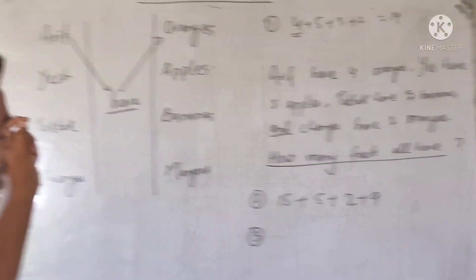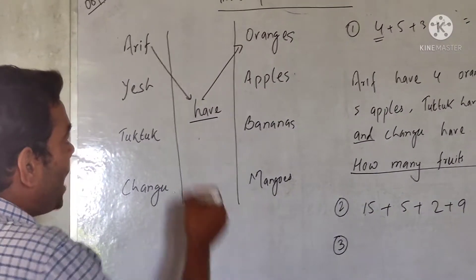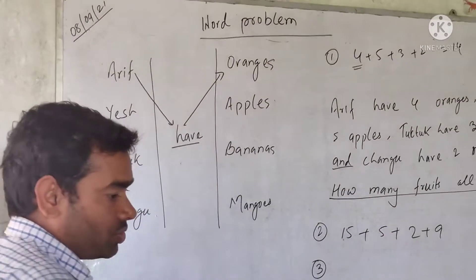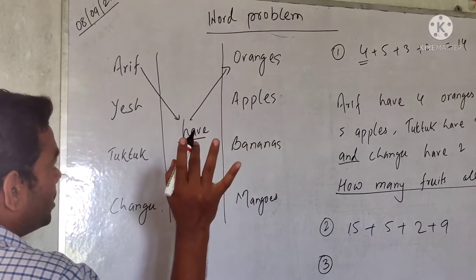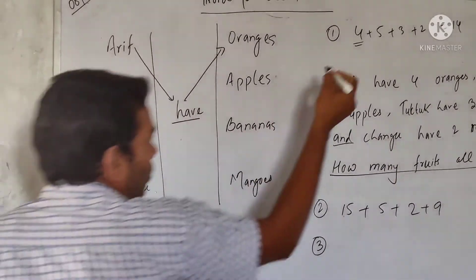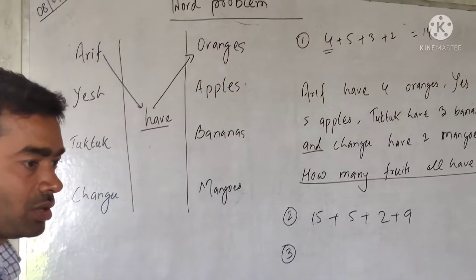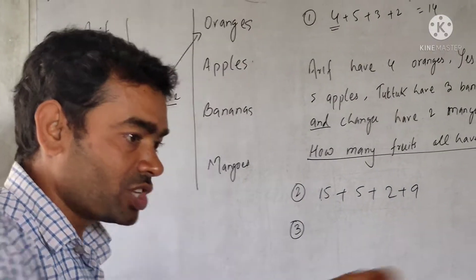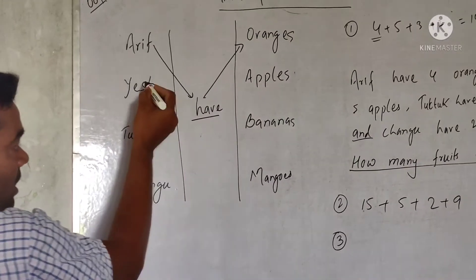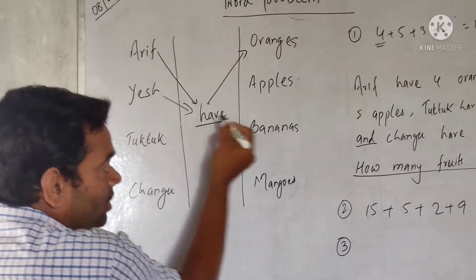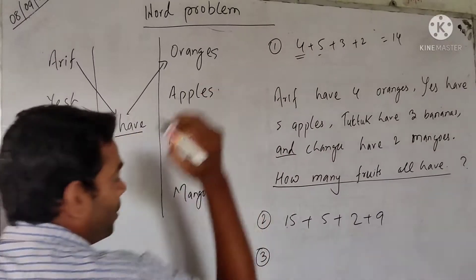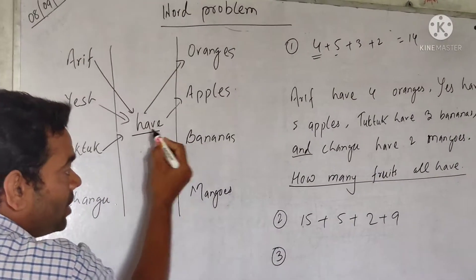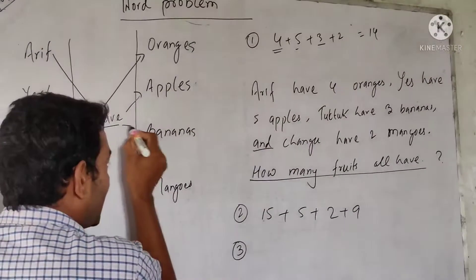Look at this. First of all, you have to make an arrow: Arik to 'have,' and 'have' to orange. Similarly, the first sentence: Arik have four mangoes. Then the second: have five apples. And Tuk Tuk have three bananas.